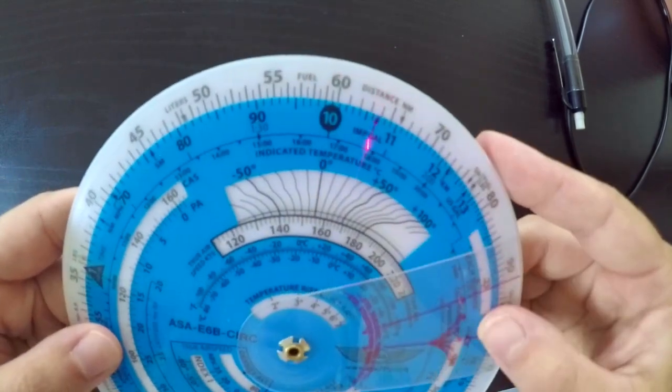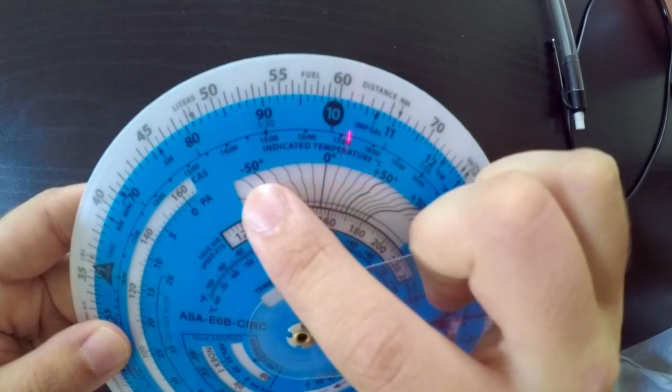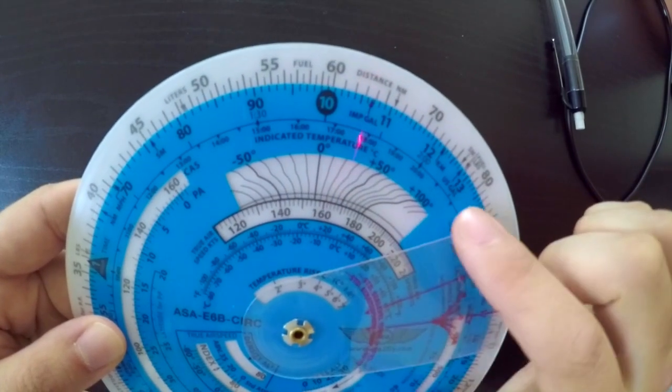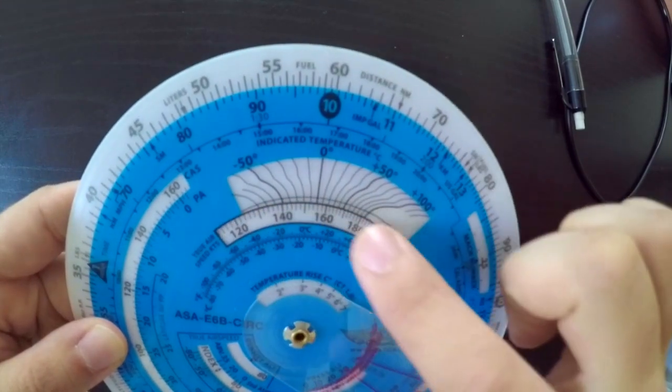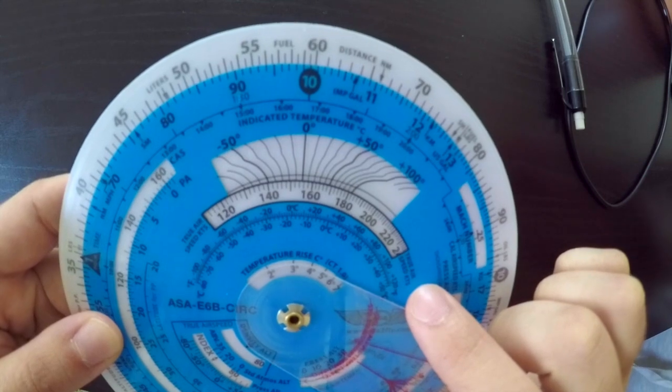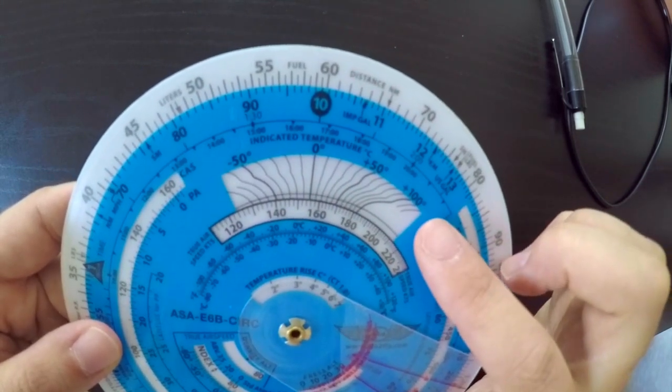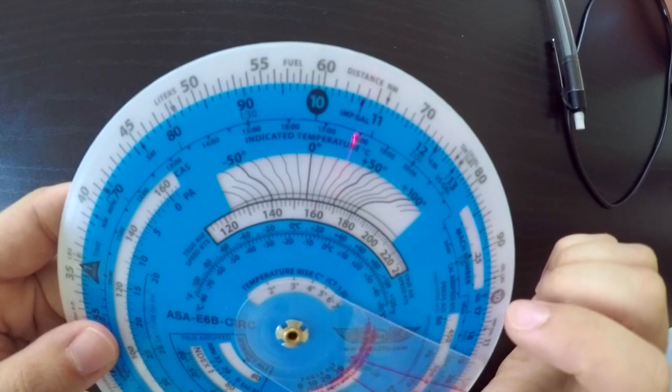If you rotate a little bit, you'll see indicated temperature in degrees Celsius with negative 50 over here and 100 degrees over here. And this index right here, it says true airspeed in knots. So we have our true airspeed, we have our temperature, we have our pressure altitude, and now we need to find our calibrated airspeed.